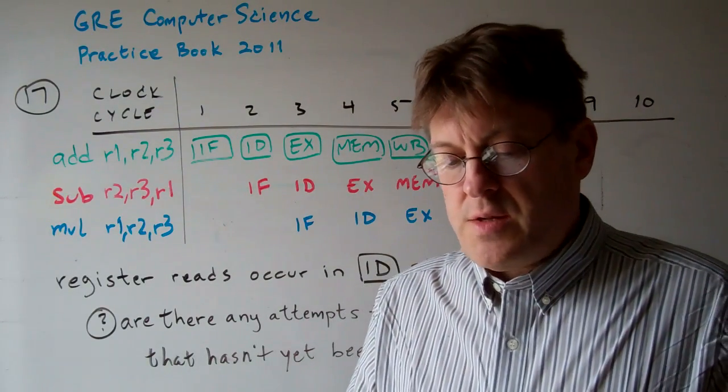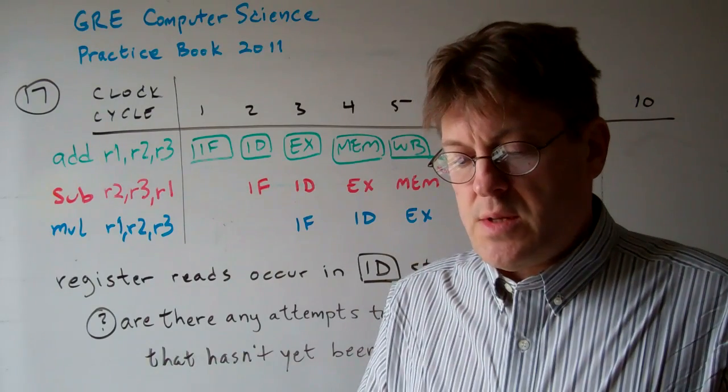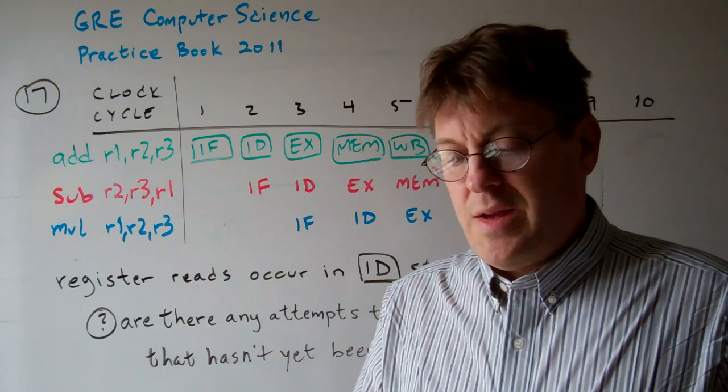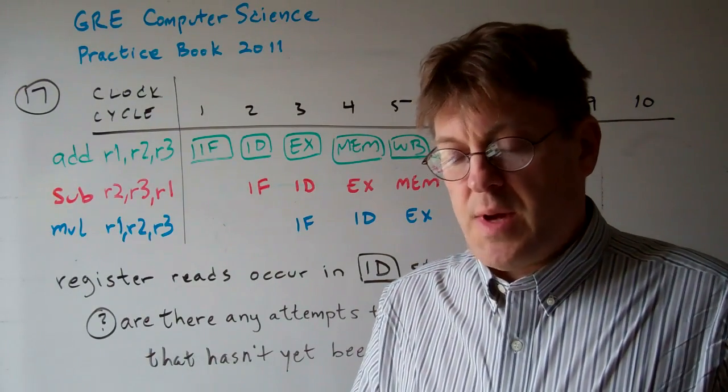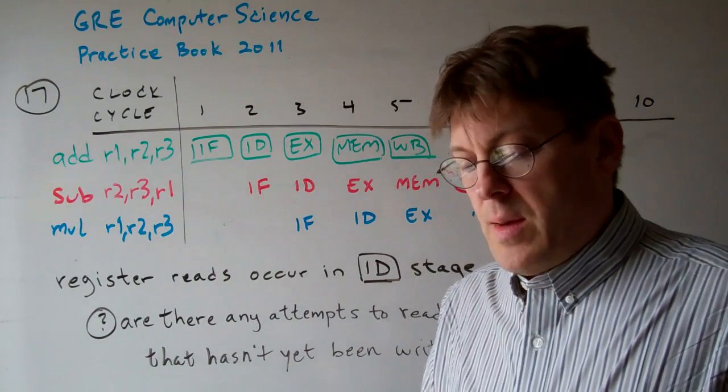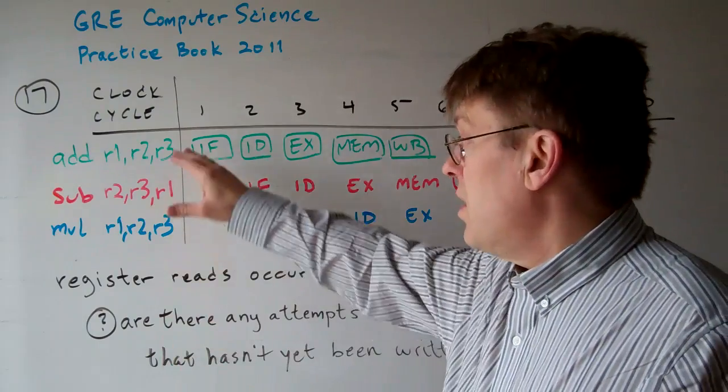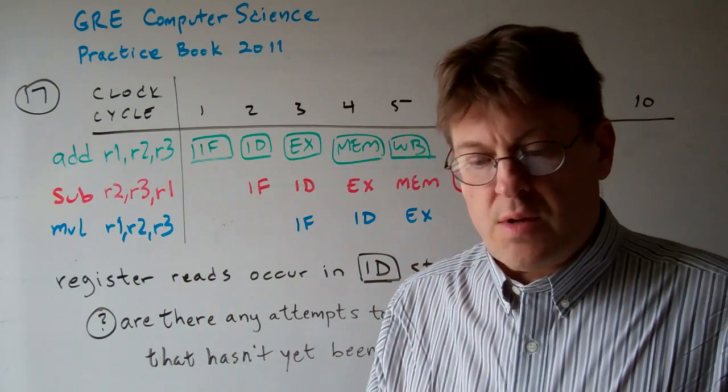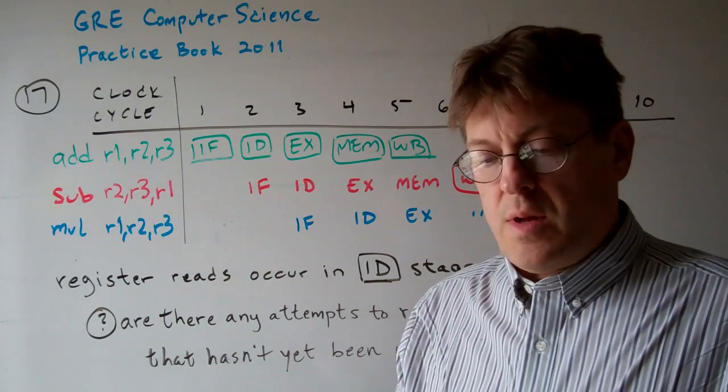Question 17. Consider the following instruction sequence in a single issue, in order, five-stage pipeline: IF, ID, EX, MEM, and WB. The opcodes, destinations, and sources are listed here, and you have them in your example test.